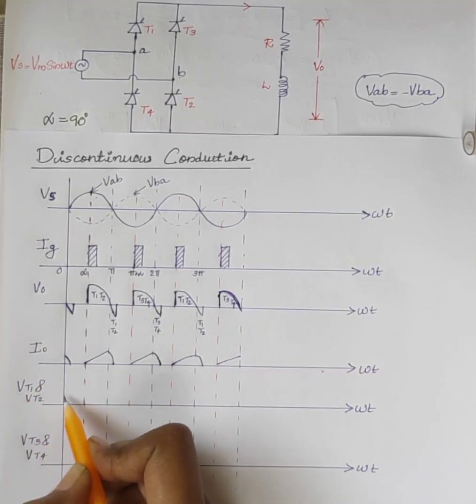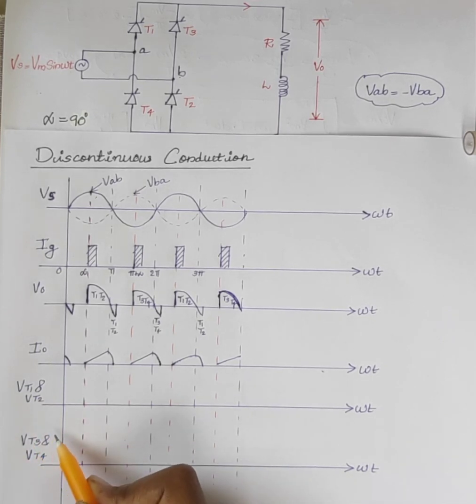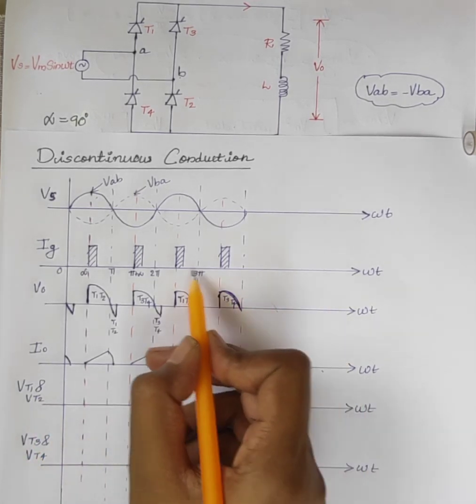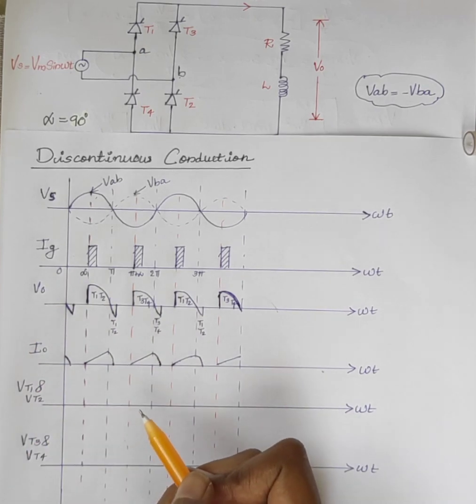Also, we can draw VT1, VT2 and VT3, VT4 by referring the output voltage waveform V0.